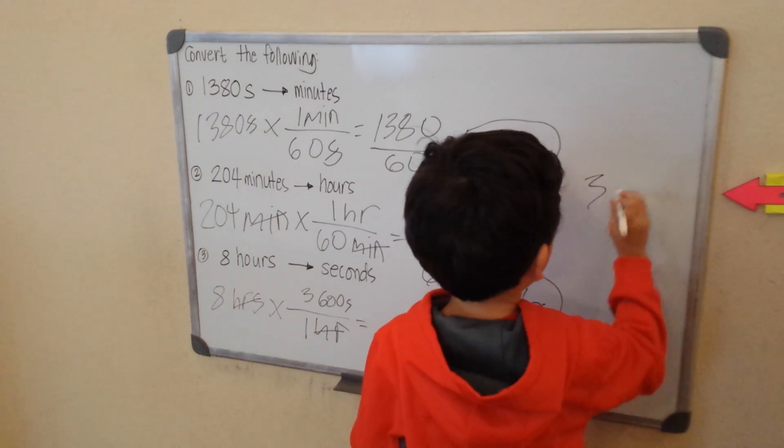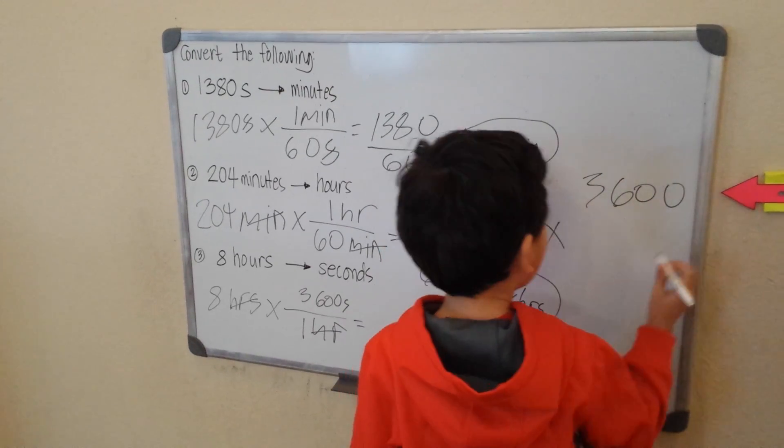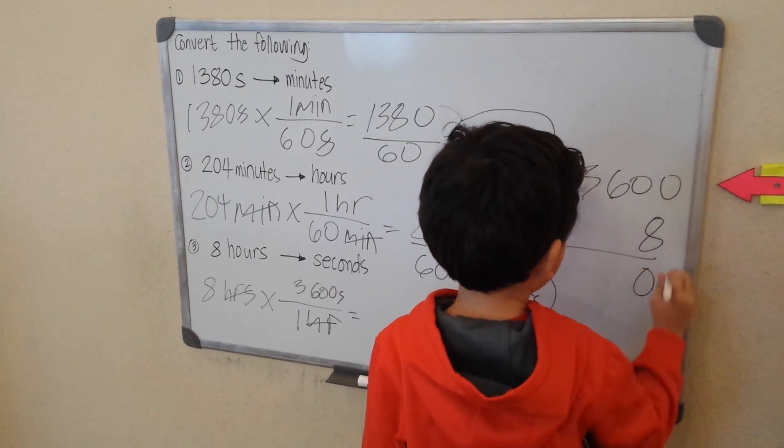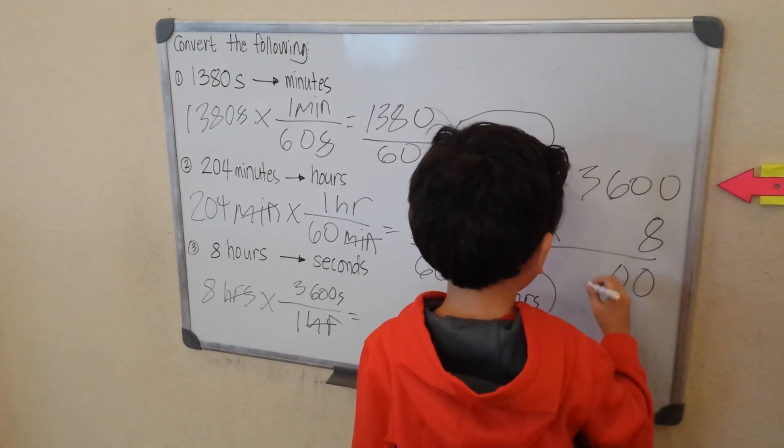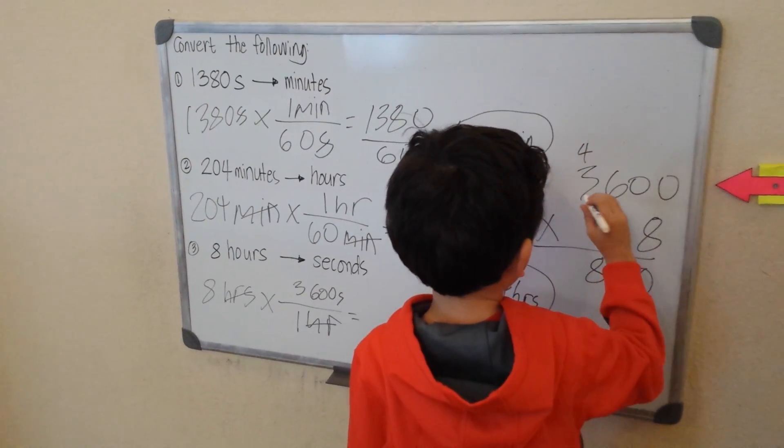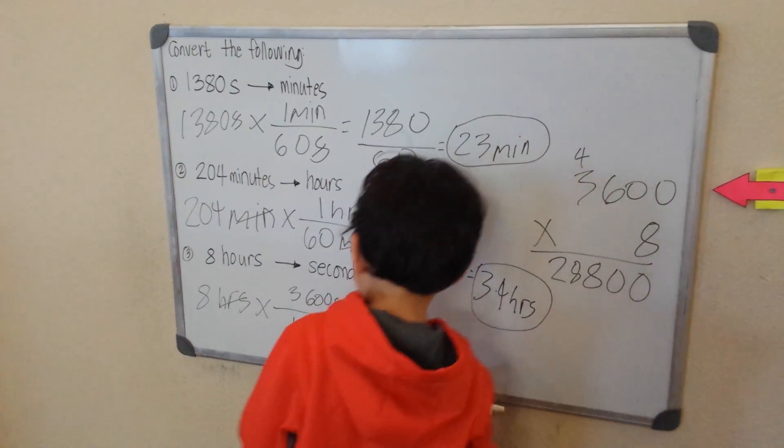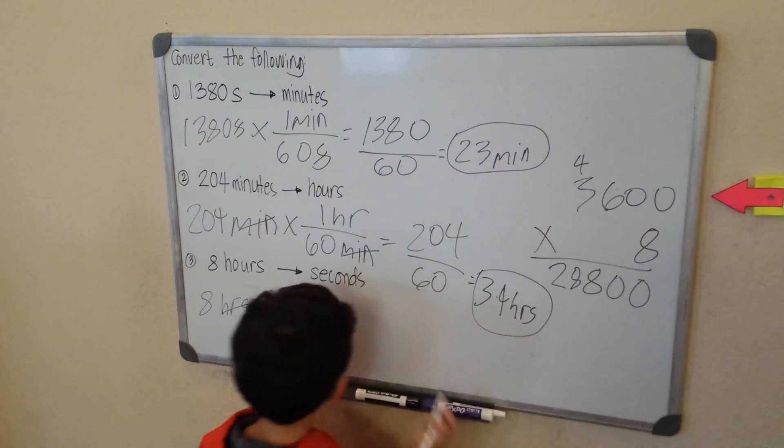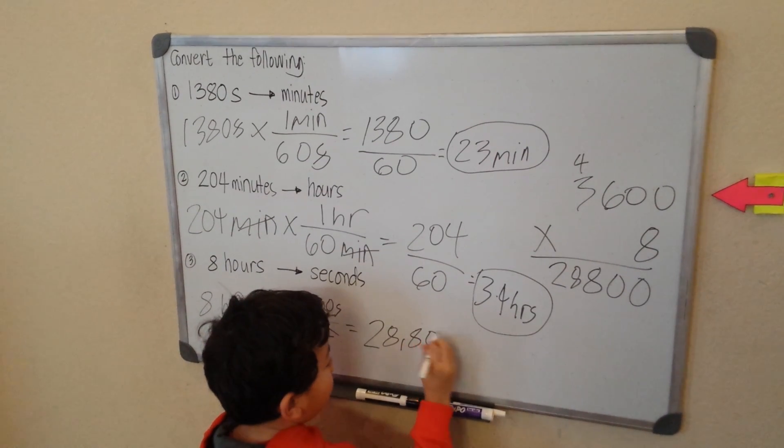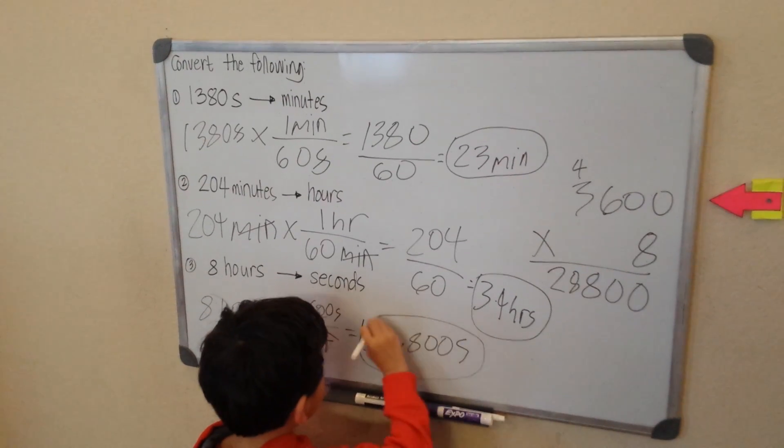3,600 times eight. Zero. Zero. Four times eight. Carry four. Eight times three. 24 plus four. 28. My goodness. It's a big one. 28,800 seconds. Wow. That's amazing.